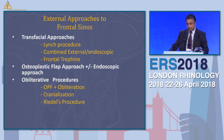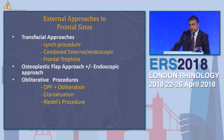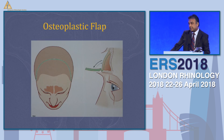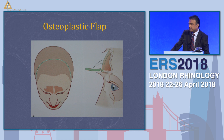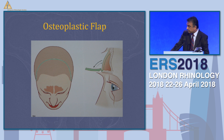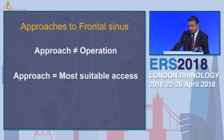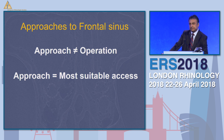When we talk about open approaches, you can talk about transfacial, osteoplastic flap, or obliterative procedures. Today I'm really going to concentrate on osteoplastic flap. Osteoplastic flap has probably been well established for over 80 years and was the workhorse of management of frontal sinus surgery. It went into dispute for many good reasons and has been overtaken by endoscopic procedures. But in this current era, how do we see the role of something like that?